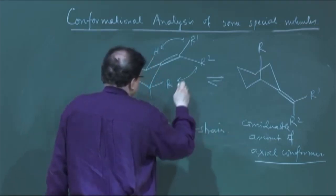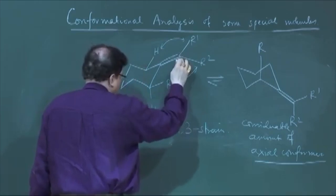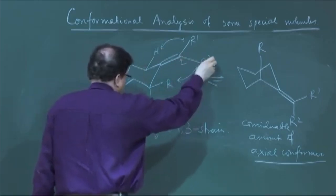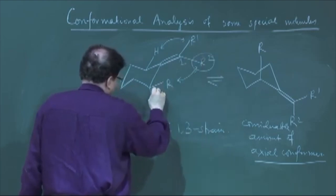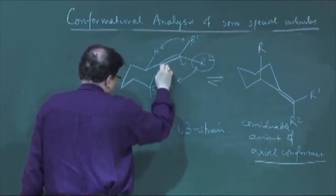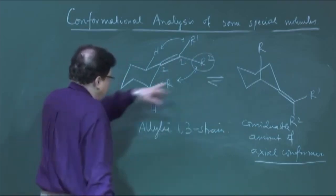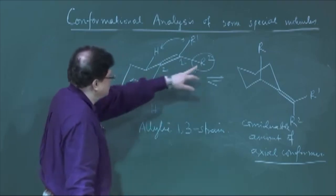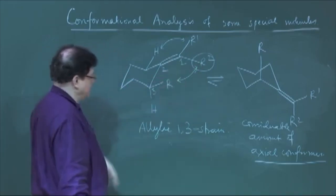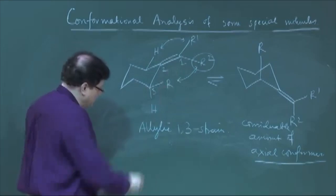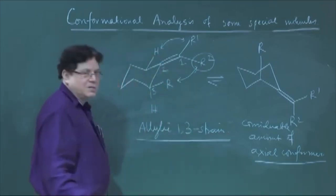Like the 2-alkyl and 3-alkyl ketone effects, this also has a name: it is called allylic 1,3-strain. Why? Because the strain is between the substituents attached to C1 and C3 — that is, 1, 2, 3 — so it is called allylic 1,3-strain.